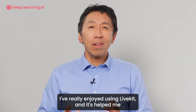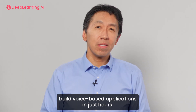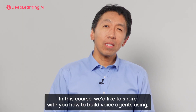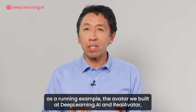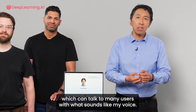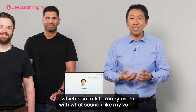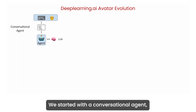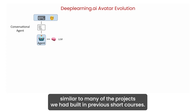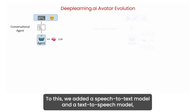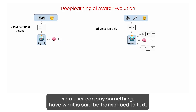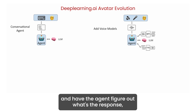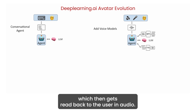I've really enjoyed using LiveKit, and it's helped me build voice-based applications in just hours. In this course, we'd like to share with you how to build voice agents using, as a running example, the avatar we built at DeepLearning.ai and GrowAvatar, which can talk to many users with what sounds like my voice. We started with a conversational agent, then added a speech-to-text model and a text-to-speech model, so a user can say something, have what they said be transcribed to text, and have the agent figure out the response, which then gets read back to the user in audio.